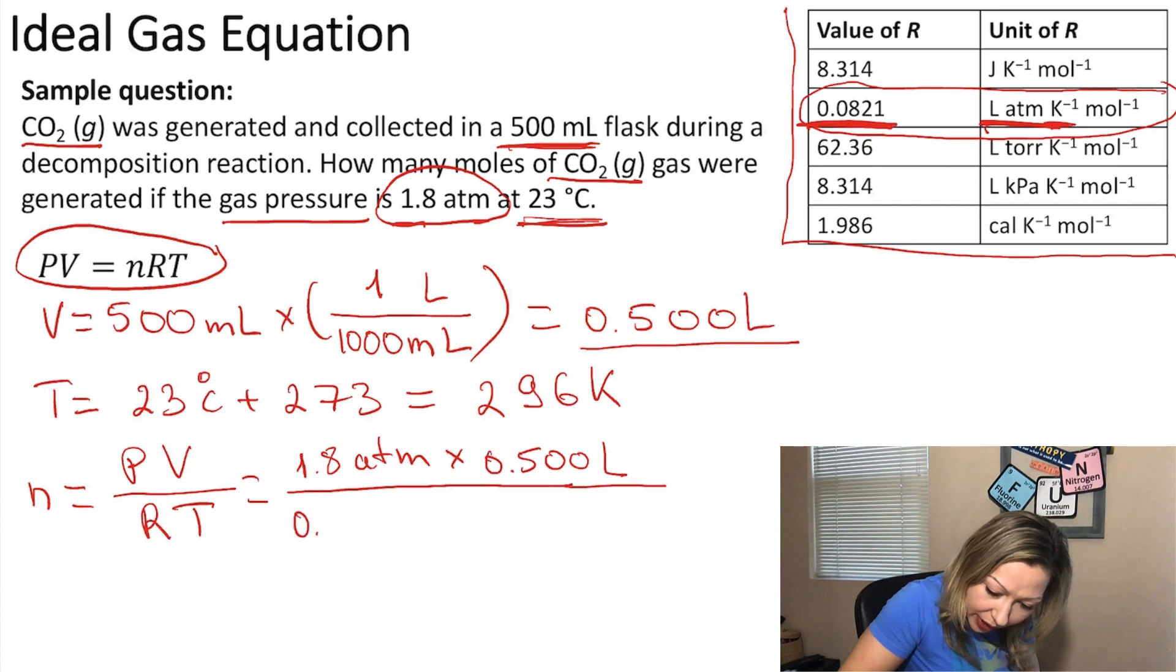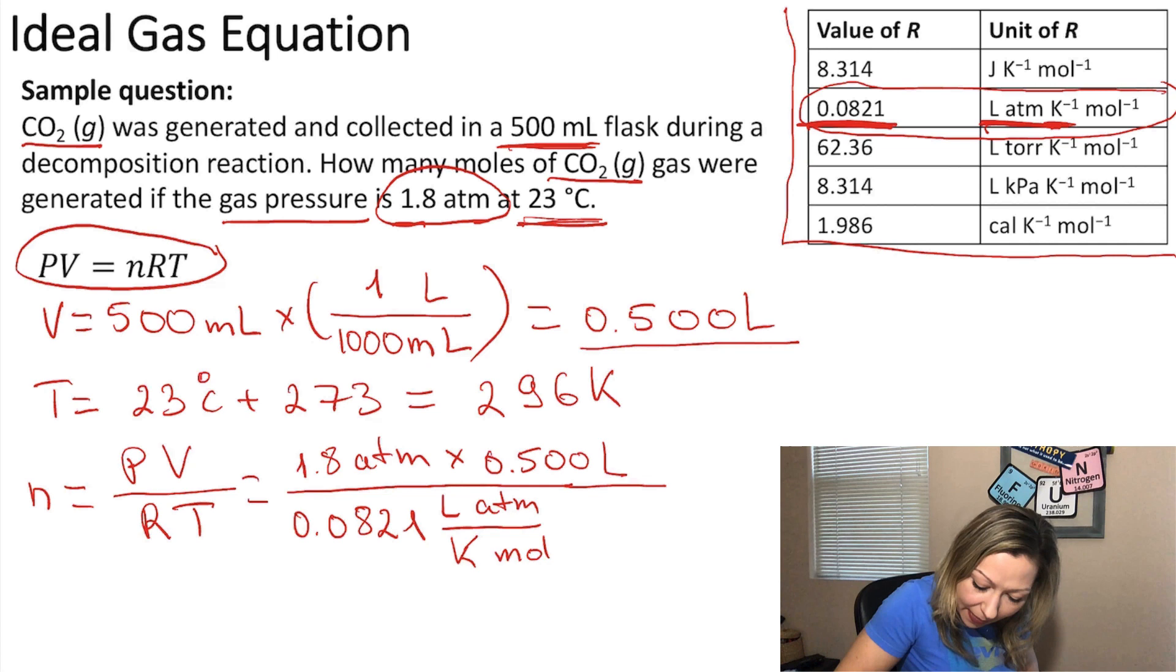So 0.0821 liter atm divided by Kelvin times mole, and then we have to multiply that by the temperature in Kelvin which is 296 Kelvin.